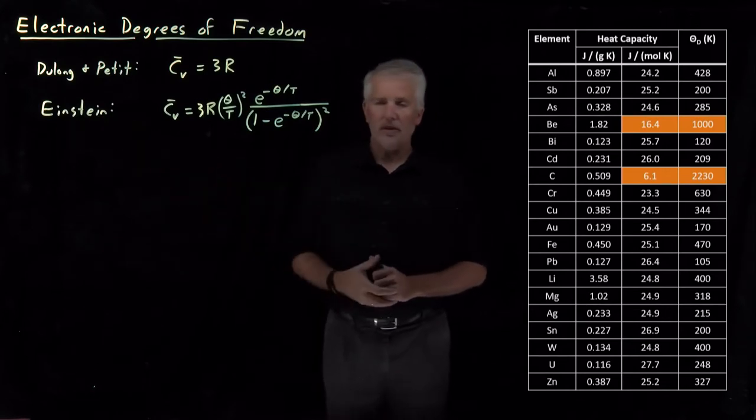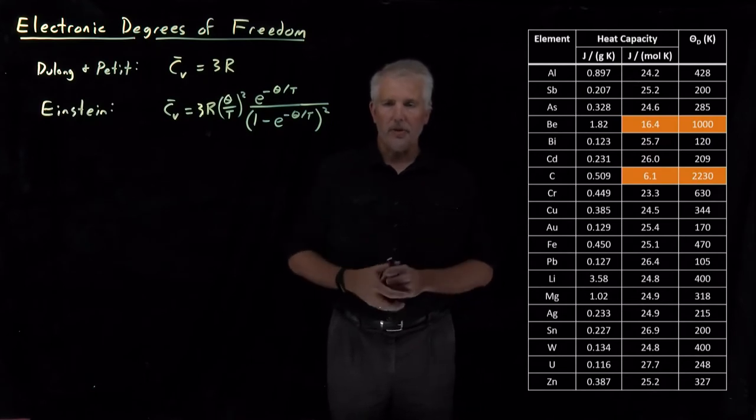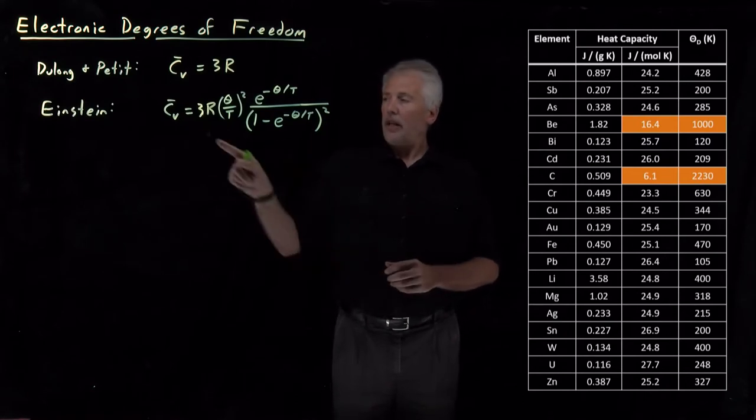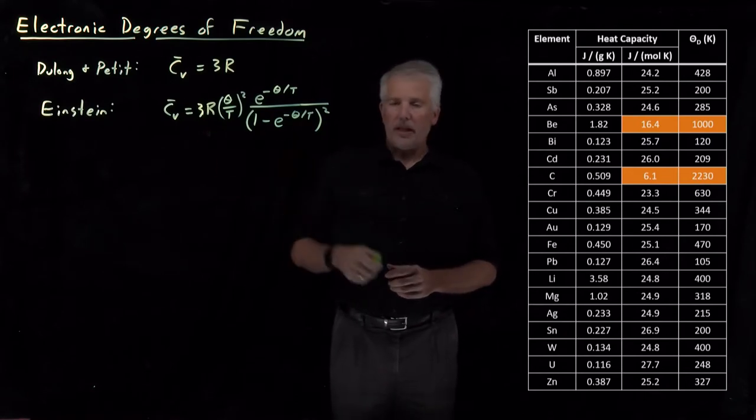And then the Einstein model of the solids, essentially just treating each of the vibrational degrees of freedom like a harmonic oscillator, tells us this more complicated expression that gives us a temperature-dependent heat capacity.